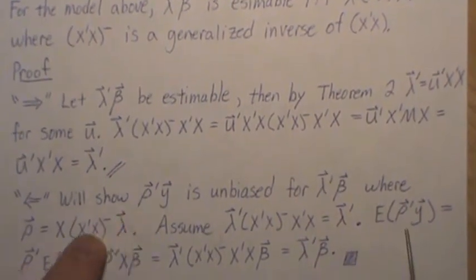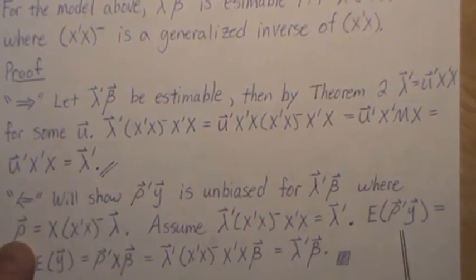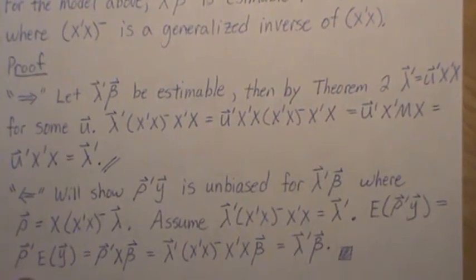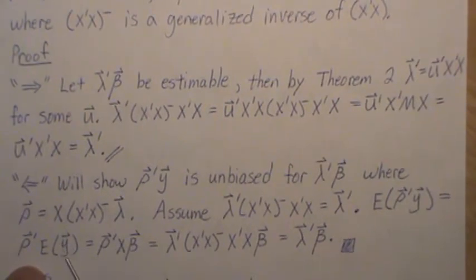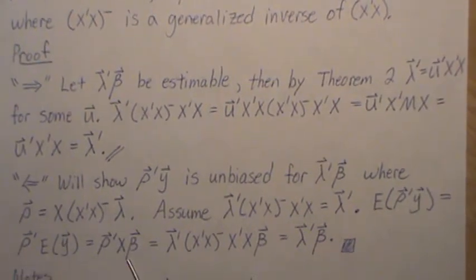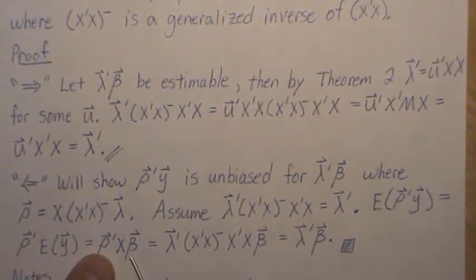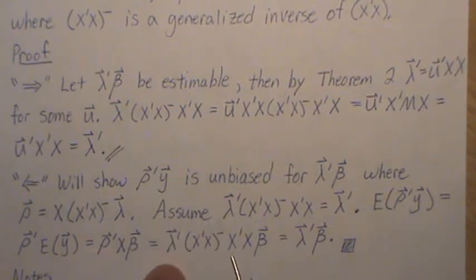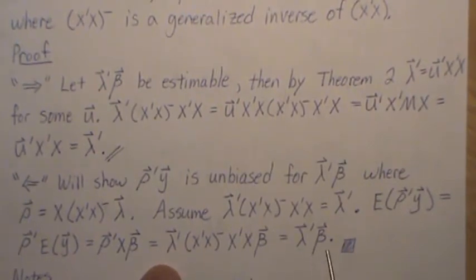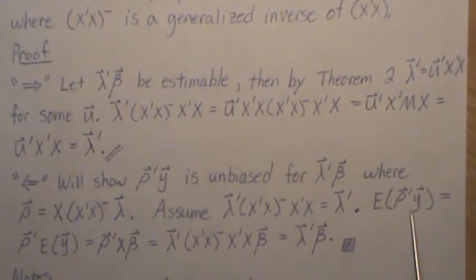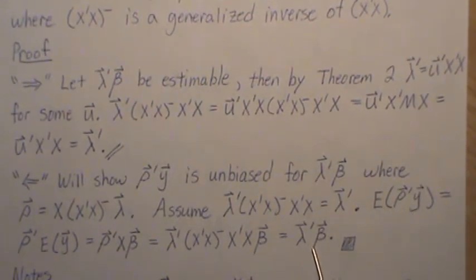Now let's look at the expected value of this. Now we're going to use a special row, this row in here. So now this becomes, you know, the expected value goes in and it goes to the y. Expected value of y is x beta. But now let's plug in this row and we get this. But we're assuming this is true. So all of this is equal to lambda. And so it is true. So we have an unbiased linear combination of the y's for this function, so it is estimable and we've proved the theorem.